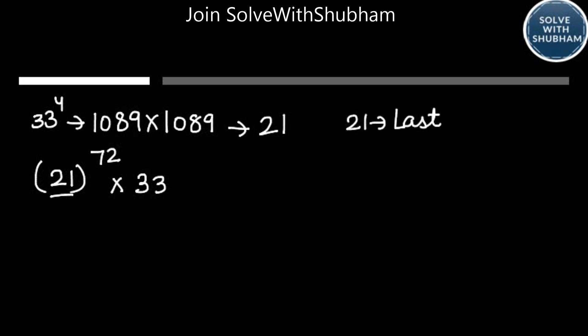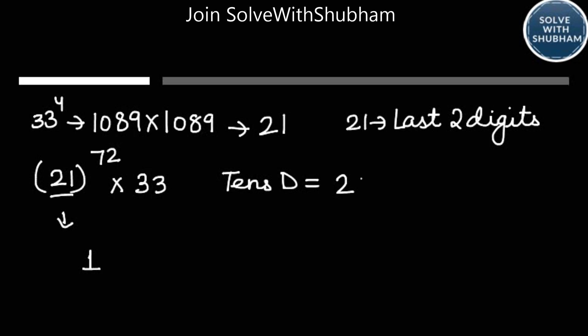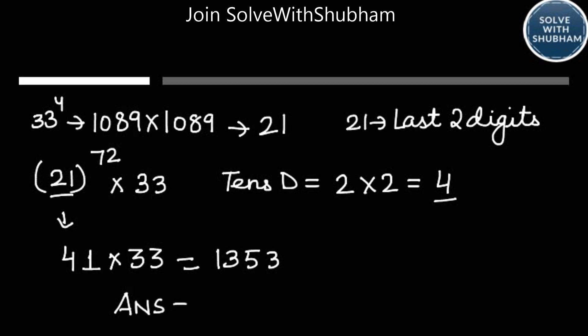21 is the last two digits we are only concerned with. Now apply the concept from the previous class — how to find out last two digits of a number ending in 1. The unit digit is 1. For the tens digit, multiply the tens digit of the base by the last digit of the power. So 21 to the power 72 ends with 41. Then 41 × 33 gives 1353, and the last two digits give us the answer: 53.